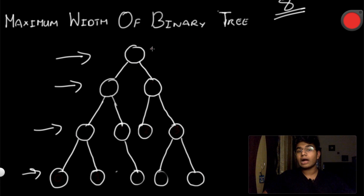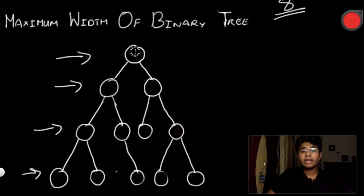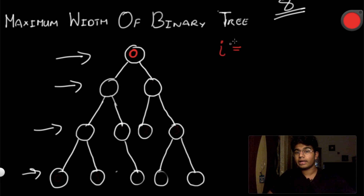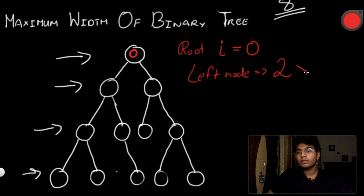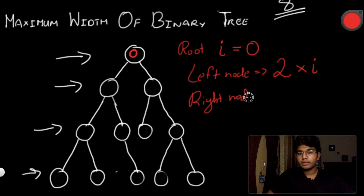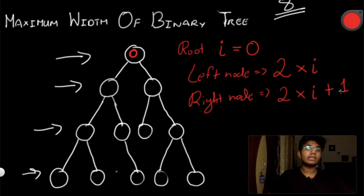Our root node is going to have a position value of zero. We'll call it i, so in this case i equals zero for the root. Its left child node is going to have a value of two multiplied by i, and its right child node is going to have a value of two multiplied by i plus one.